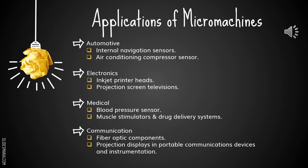The applications of micromachines include: first, automotive, which includes inertial navigation sensors and air conditioning compressor sensors. Next, electronics, which involve inkjet printer heads and projection screen televisions. Then medical applications, for example blood pressure sensors, muscle stimulators and drug delivery systems. The last one is communication, for example fiber optic components and projection displays in portable communication devices and instrumentation.